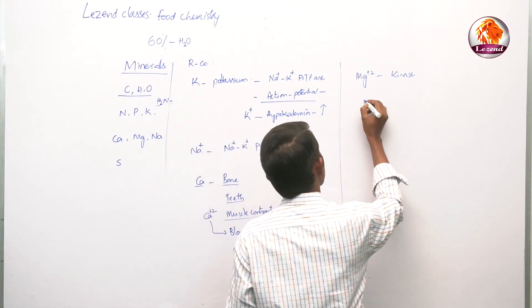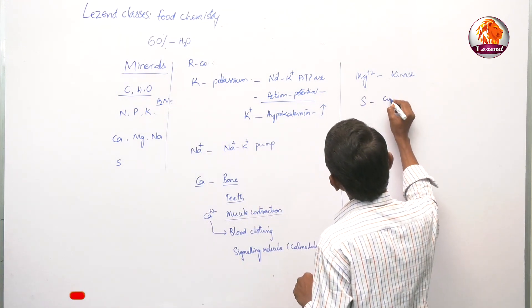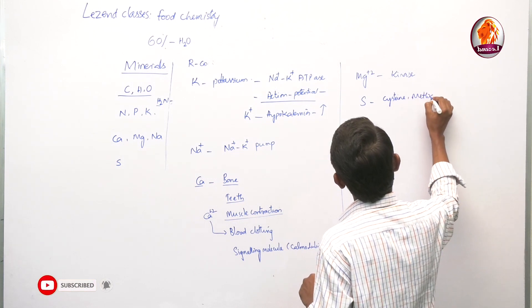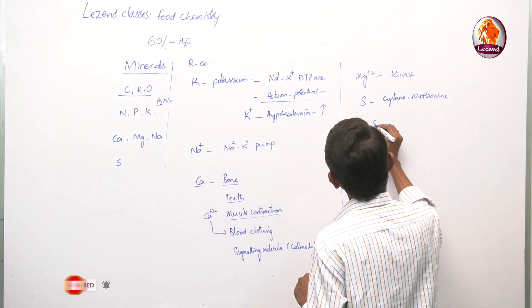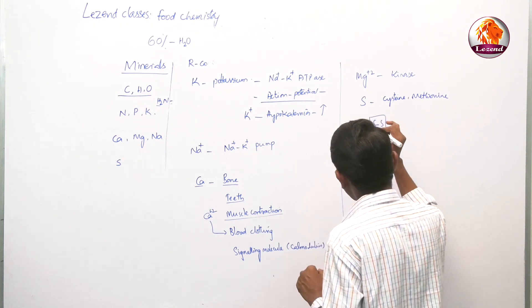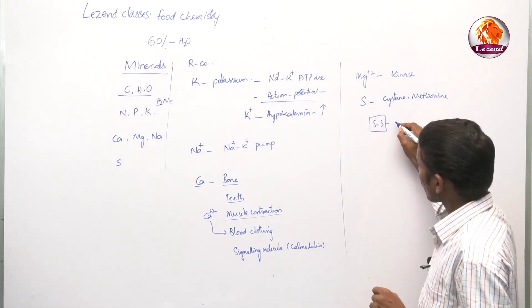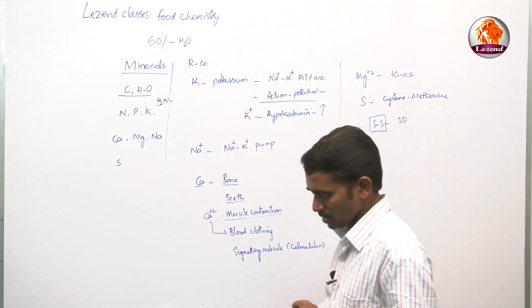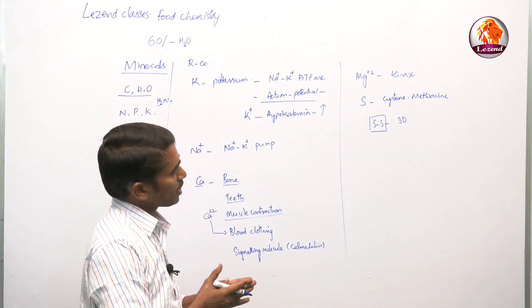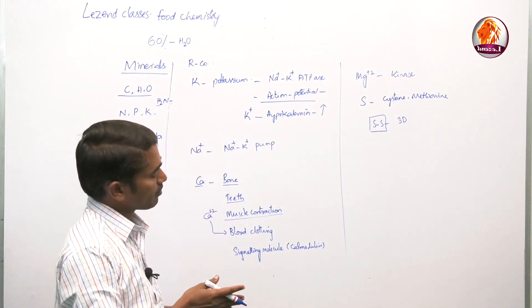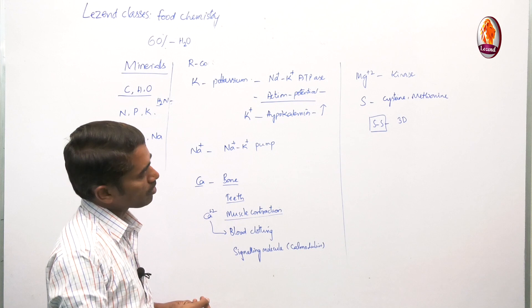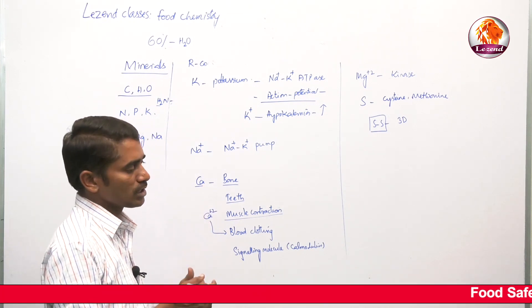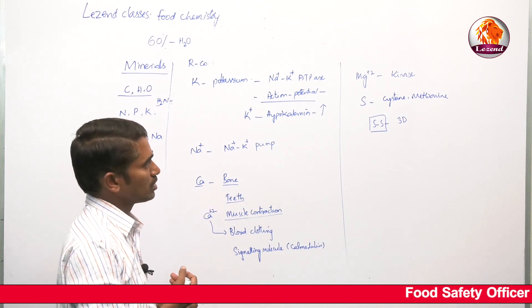Sulfur is usually present in amino acids like cysteine and methionine — these are the sulfur-containing amino acids. Disulfide bonds are essential — they are inevitable for the normal functioning of proteins in their three-dimensional structure. For example, insulin hormone also possesses disulfide bonds. In the absence of disulfide bonds, proteins lose their basic three-dimensional structure and become non-functional.